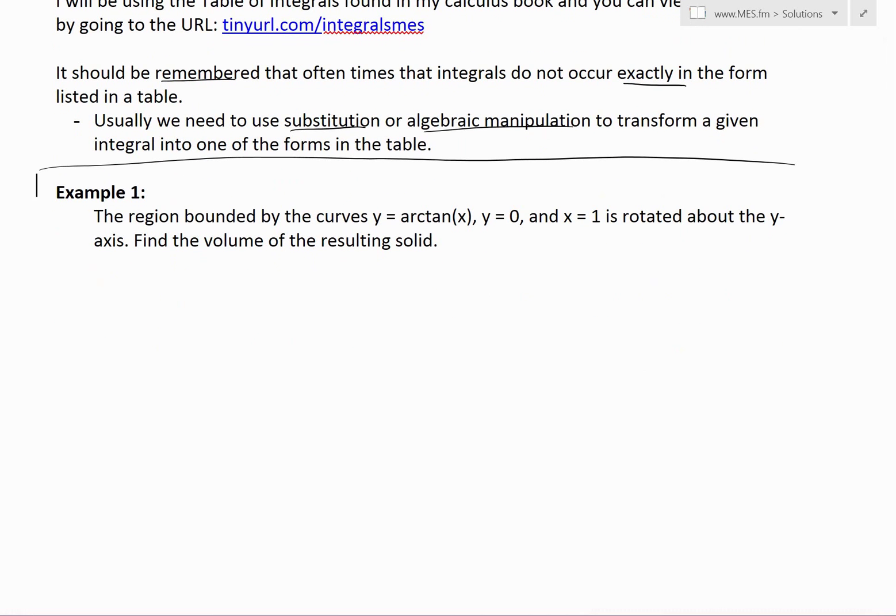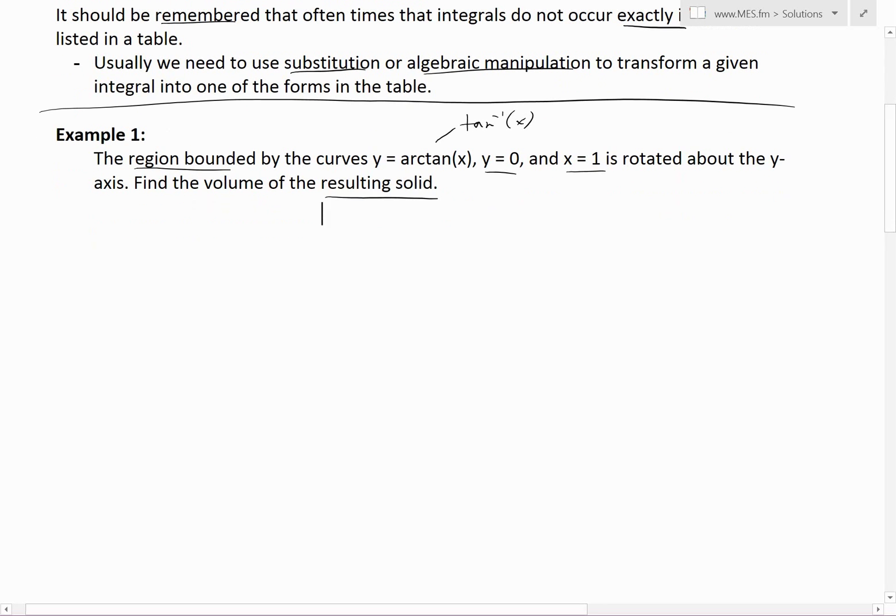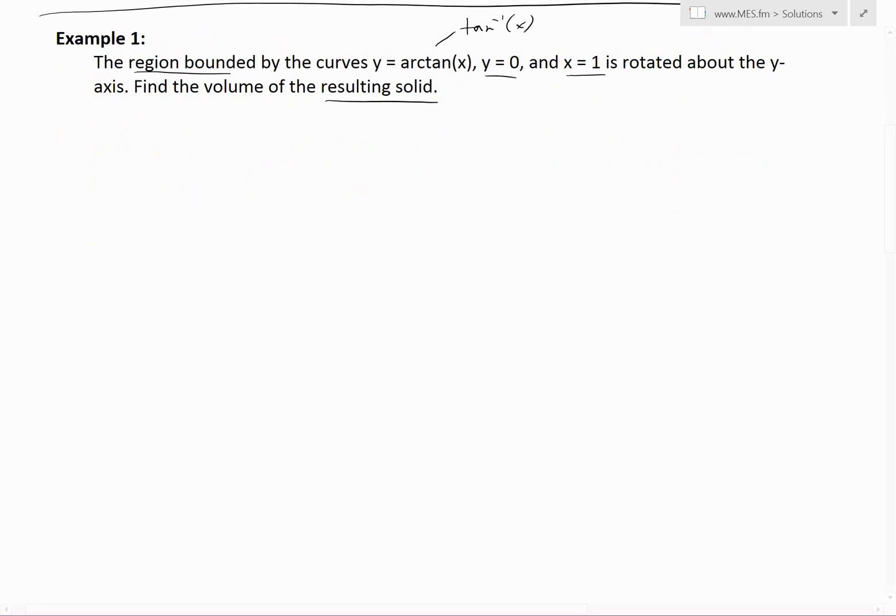Example 1: The region bounded by the curves y = arctan(x), y = 0, and x = 1 is rotated about the y-axis. Find the volume of the resulting solid.